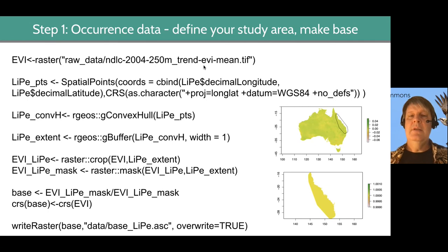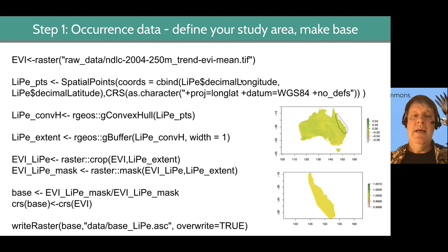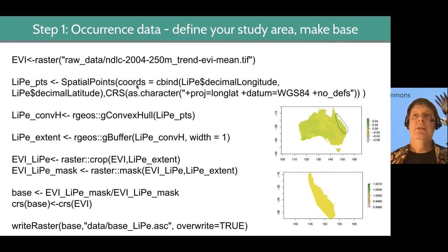Then we're going to take LIPE — the data table with all our species records from ALA — and turn the latitude and longitude into a spatial points layer. We're telling our code that those coordinates relate to actual latitudes and longitudes on the ground, and this is the coordinate reference system we want to match it to. We want to match these points to the same CRS as the environmental layer. If your points are in a different CRS, you'll have to reproject them.